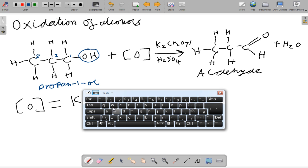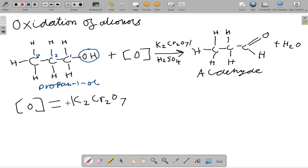Potassium dichromate is considerably an oxidizing agent, and this forms the aldehyde propanal and water.